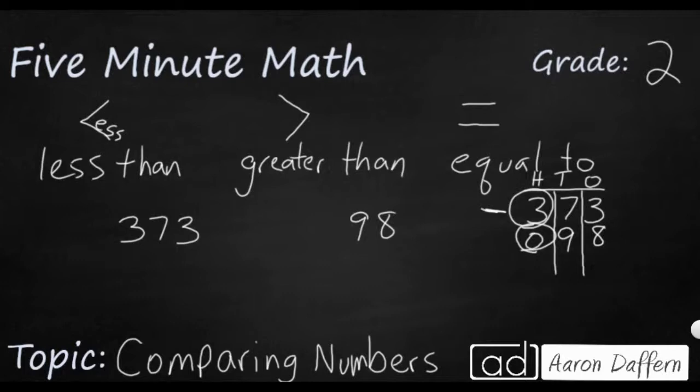The opening of the less than or greater than symbol always goes towards the larger number. So in this case, we're going to use the greater than symbol. When we read it from left to right, we say 373 is greater than 98. You can also use the word larger. Either of those work.